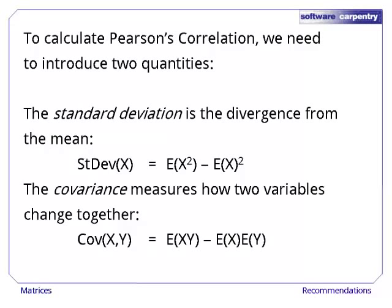Pearson's correlation requires that we know the standard deviation and the covariance of two vectors of measurement. Standard deviation is the average amount that a rating deviates from the mean rating. Covariance is a measure of how two variables change together. It will be positive and large if high values of x correspond to high values of y, negative and large if high values of x correspond to low values of y, and zero if there is no pattern.